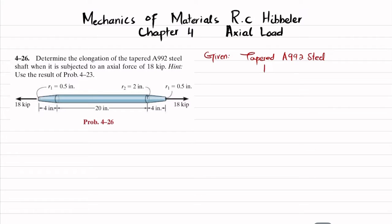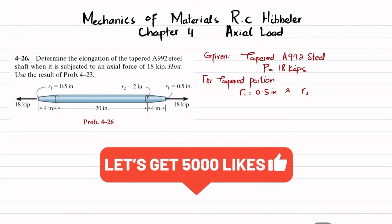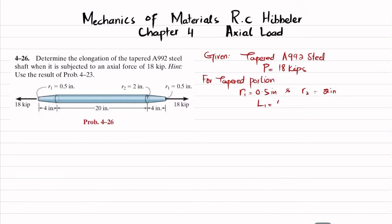The load, axial load P, is given as 18 kips. For tapered portion, we have R1 is equal to 0.5 inch and R2 is 2 inches. The tapered length L1 is taken as 4 inches.